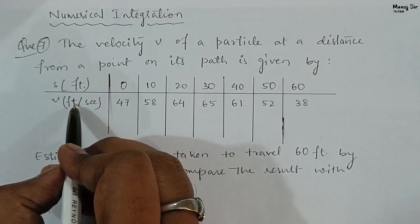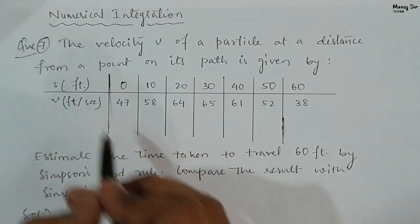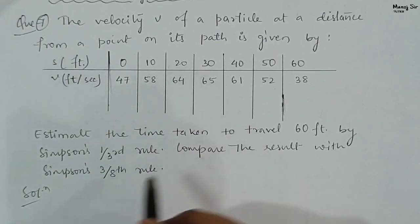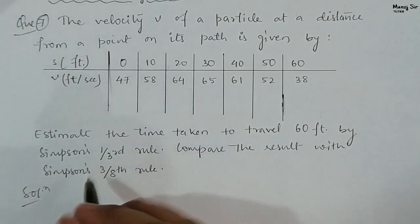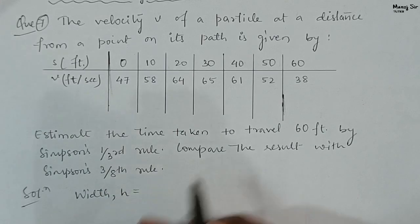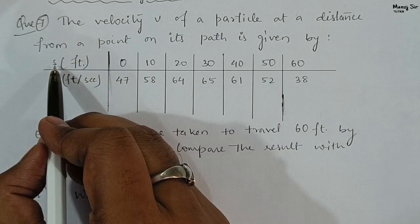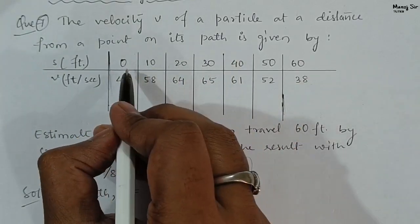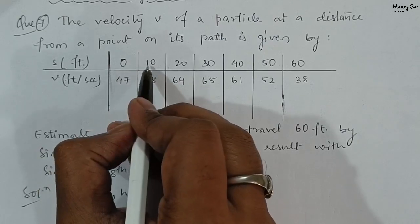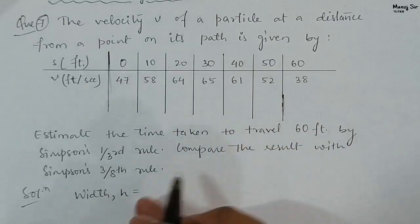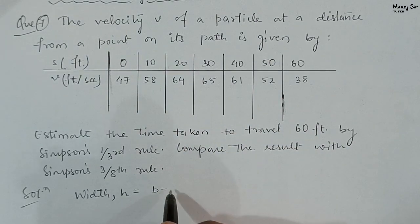Distance is given in feet, velocity is given in feet per second, so time taken will be in seconds. First we will find the width h. Here the interval size is 10 as the distances go 0, 10, 20, 30, 40, 50, 60. We show this by the formula h = (b - a) / n, where b is the upper limit 60 and a is the lower limit 0.